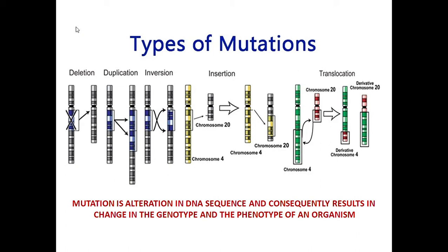When a mutation happens in the DNA sequence, it can be detected. Physical factors like harmful light radiation can cause mutations. For example, there is X-ray radiation.